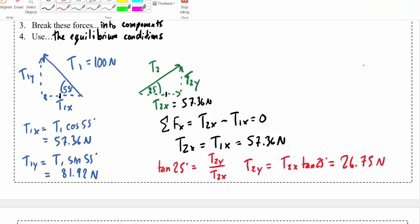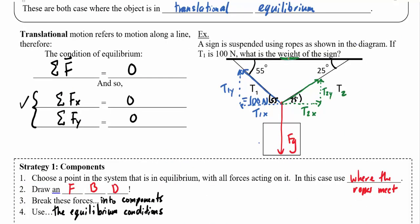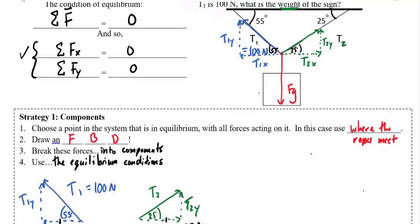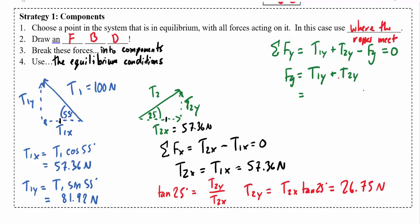The original question was asking for the weight of the sign — so really we're trying to find Fg. Using the second condition of equilibrium, the sum of all y forces also has to add up to zero. I've got two upward forces T1y and T2y, and one downward force Fg — those all have to cancel to zero. So Fg equals T1y plus T2y: 81.92 plus 26.75 gives approximately 109 Newtons.